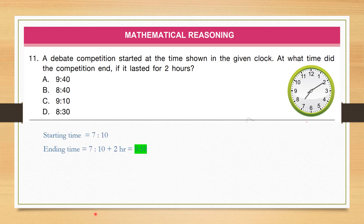Now we are in the mathematical reasoning section. Question number 11: A debate competition started at the time shown in the given clock. At what time did the competition end if it lasted for 2 hours? The time given is 7:10 and it lasted for 2 hours, so 7:10 plus 2 hours will be 9:10. Correct answer is option C, 9:10.